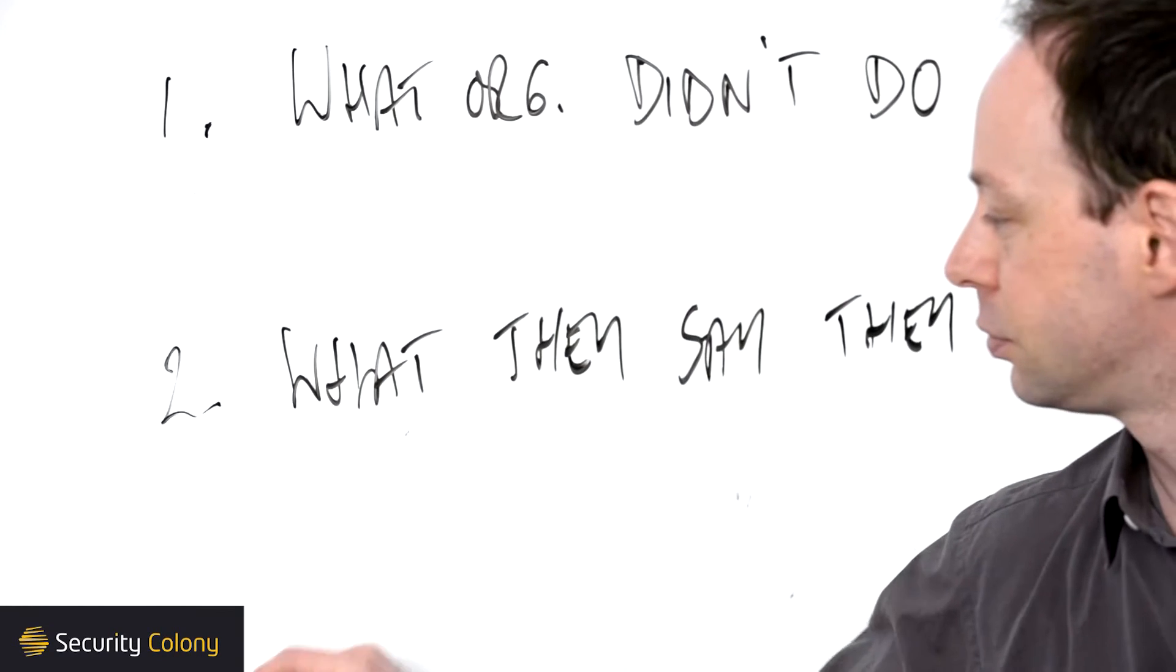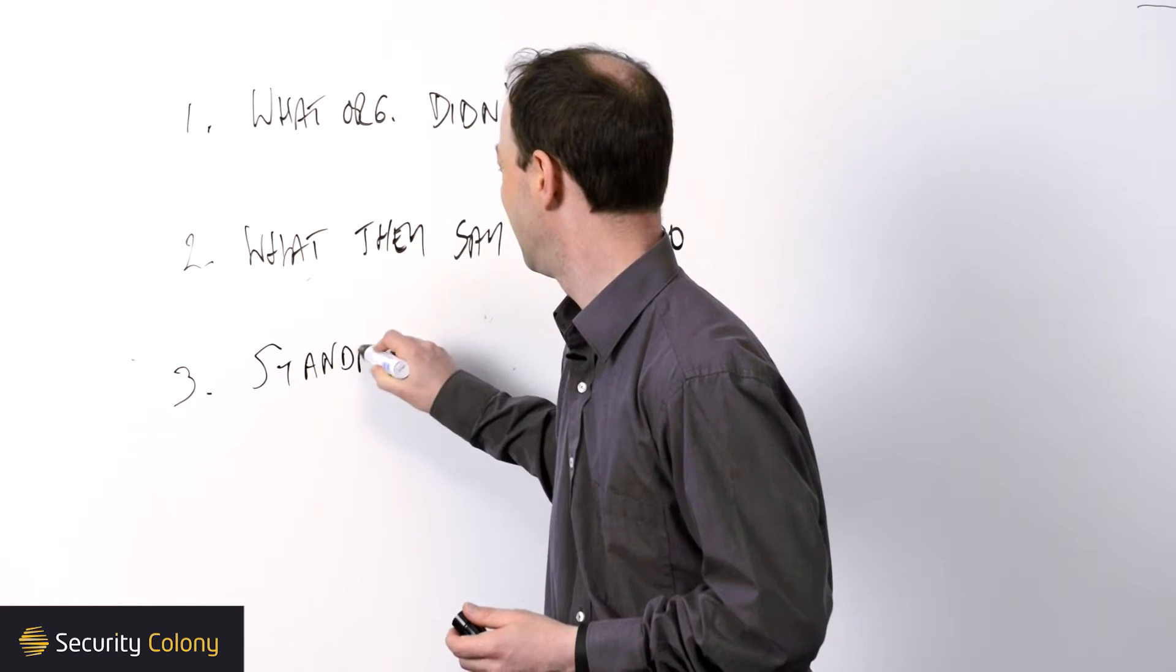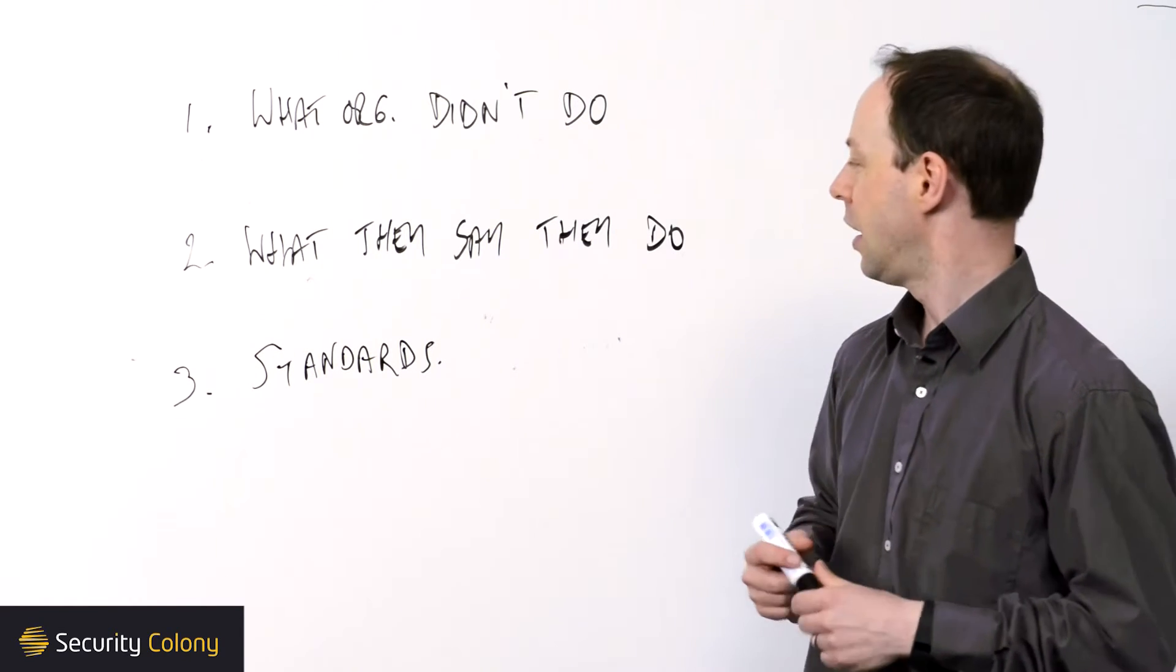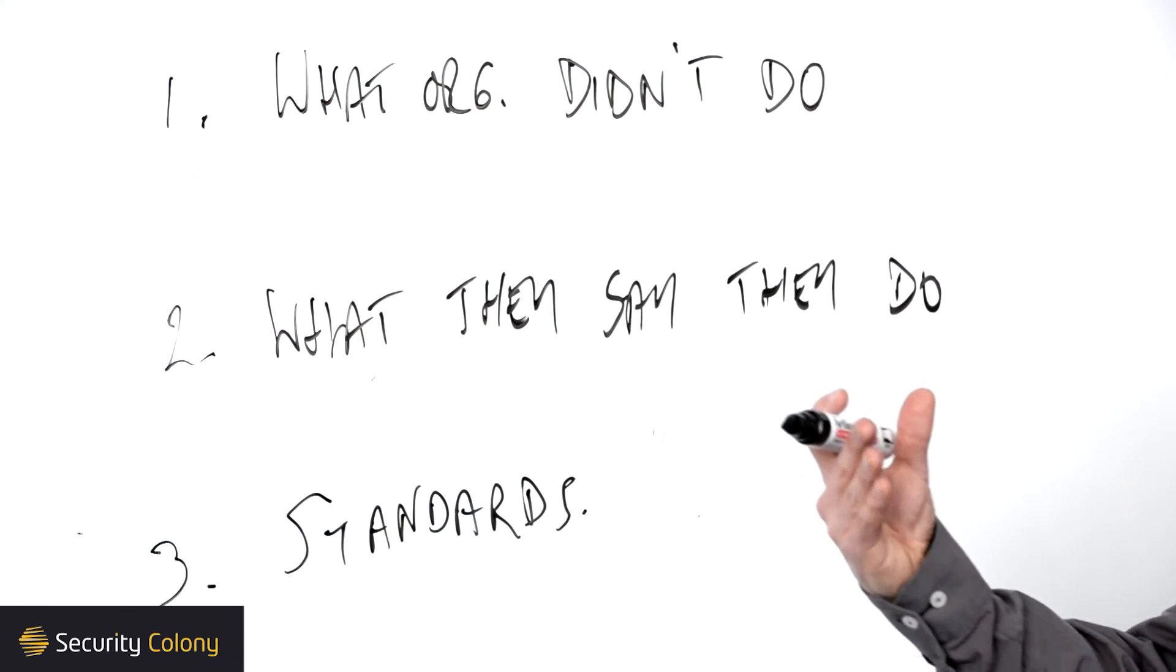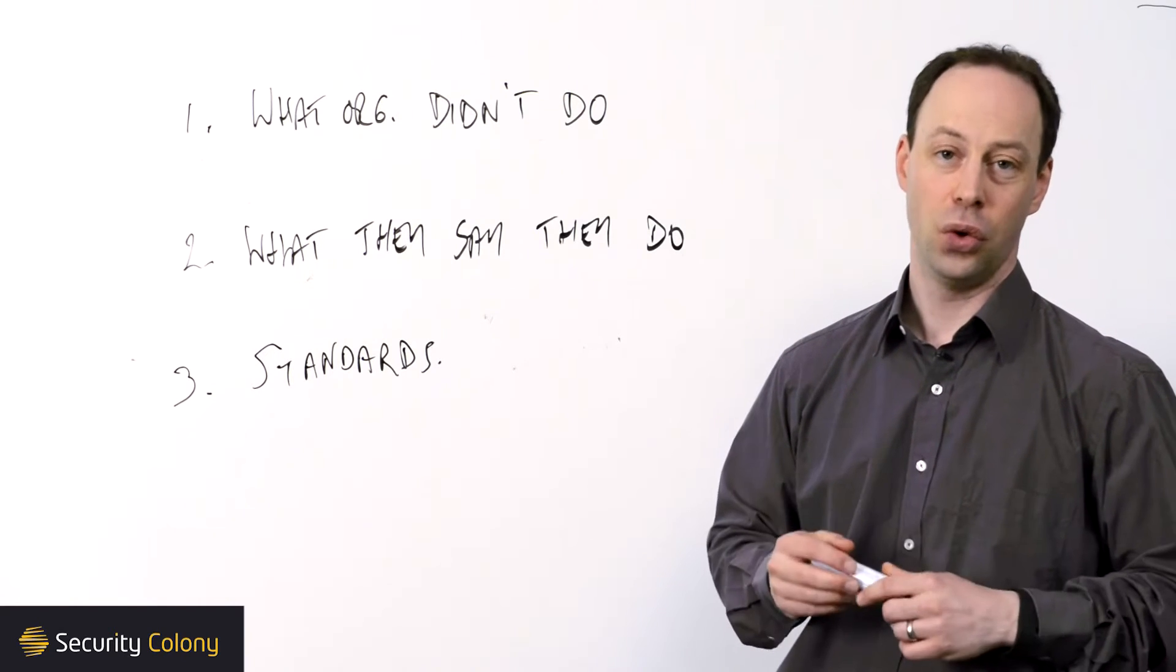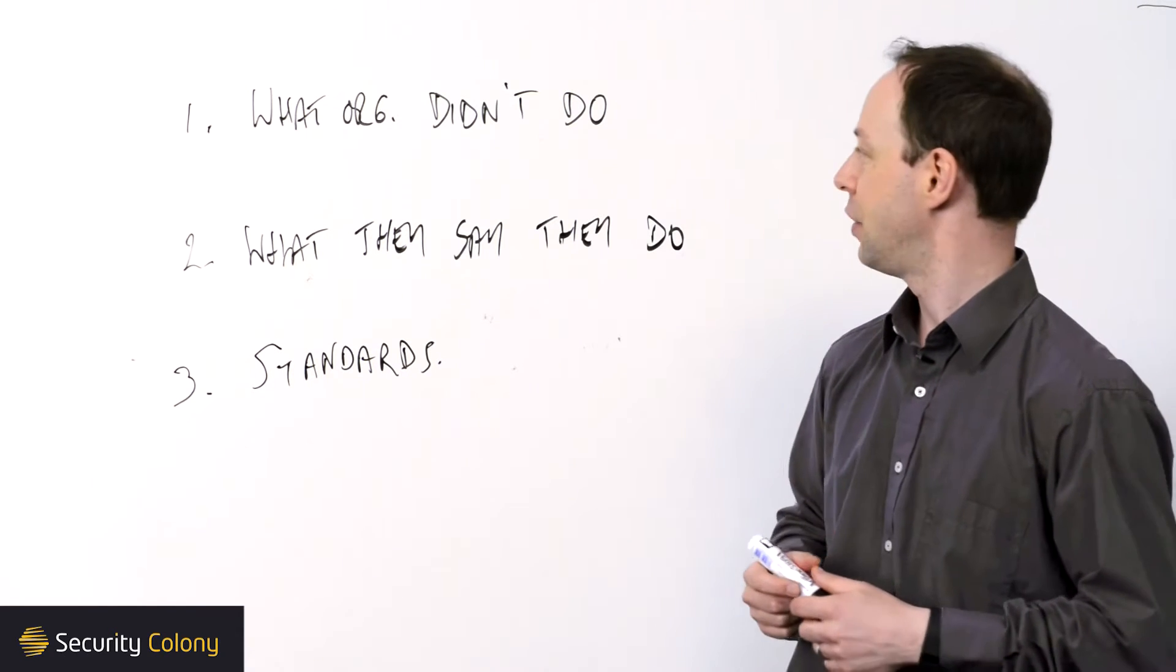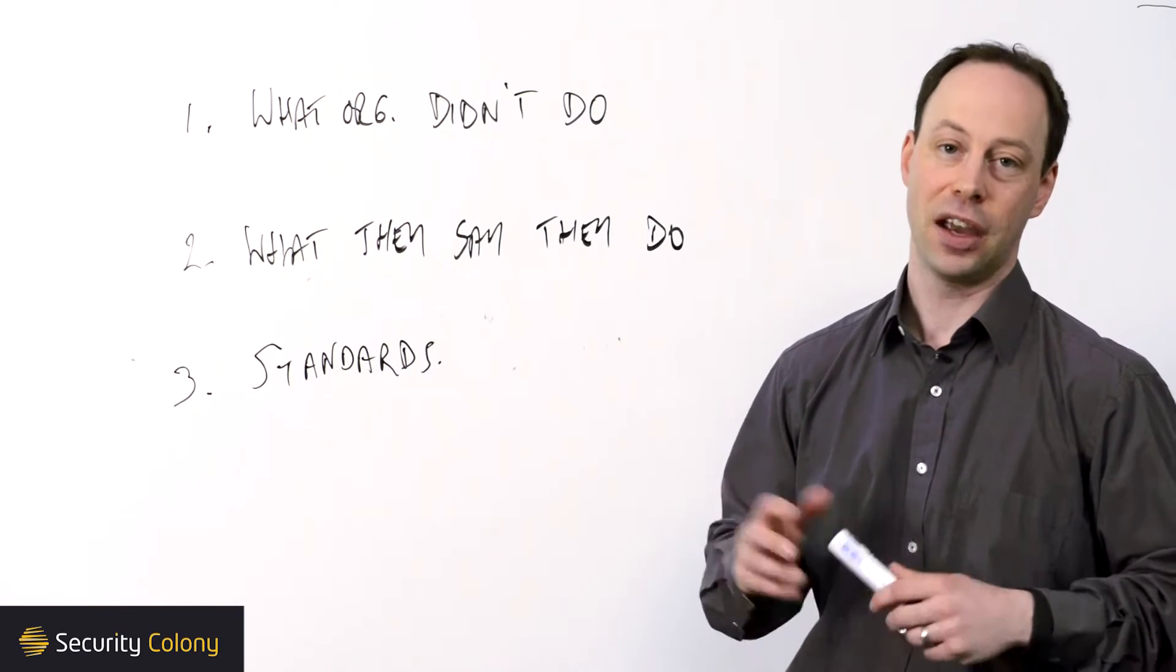And the third is standards. The wonderful thing about standards in information security is that there's so many you can really choose whichever one you like. Our approach here is to look at as many standards as we can and see what they agree on. So our argument here is if a dozen, two dozen security standards all agree that a specific control is required, then again, it's going to be hard after an incident explaining why that control wasn't in place.